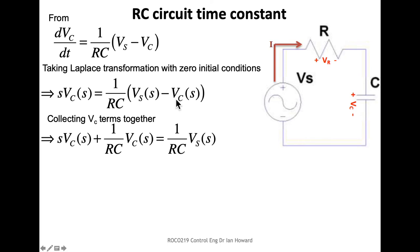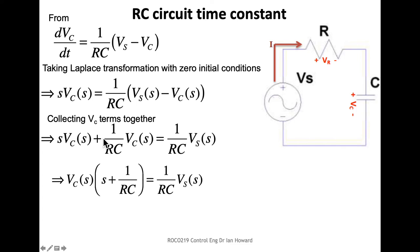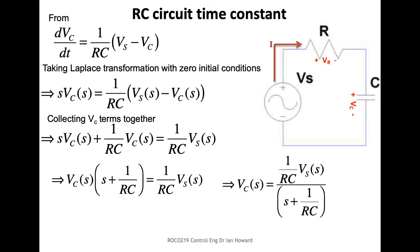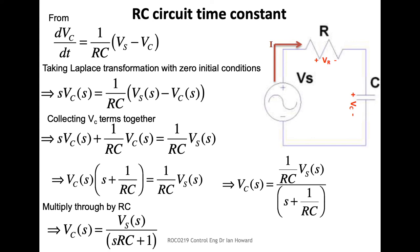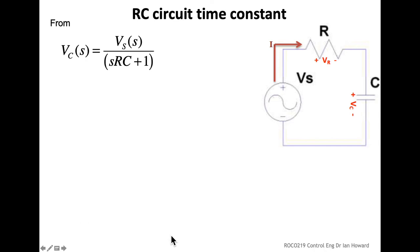Collecting all capacitor voltage terms to one side and factorizing out Vc, then dividing both sides by (s + 1/RC), we get the capacitor voltage in terms of source voltage and system parameters. Multiplying through and simplifying: Vc equals V(s) divided by (src + 1), where the denominator is (s*RC + 1).